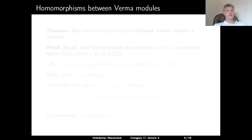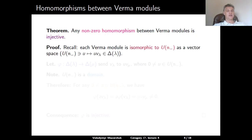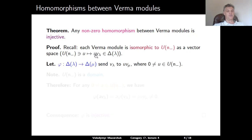Before proving the if-part, we discuss homomorphisms between Verma modules. The first claim is that any non-zero homomorphism between Verma modules is injective. To prove this, recall that any Verma module is isomorphic to U(N⁻) as a vector space — and even as a U(N⁻)-module — via the map sending U to U · v_λ.